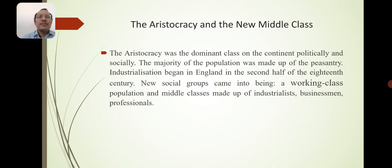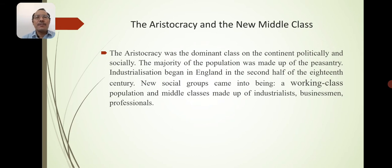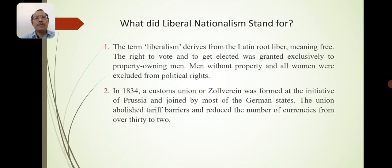The aristocracy was the dominant class on the European continent, politically and socially. The majority of the population was made up of peasants and artisans. Industrialization began in England in the second half of the 18th century. New social groups came into being: a working class population and a middle class made up of industrialists, businessmen, and professionals. A new social group evolved with the working class, industrialists, businessmen, and many other professionals.